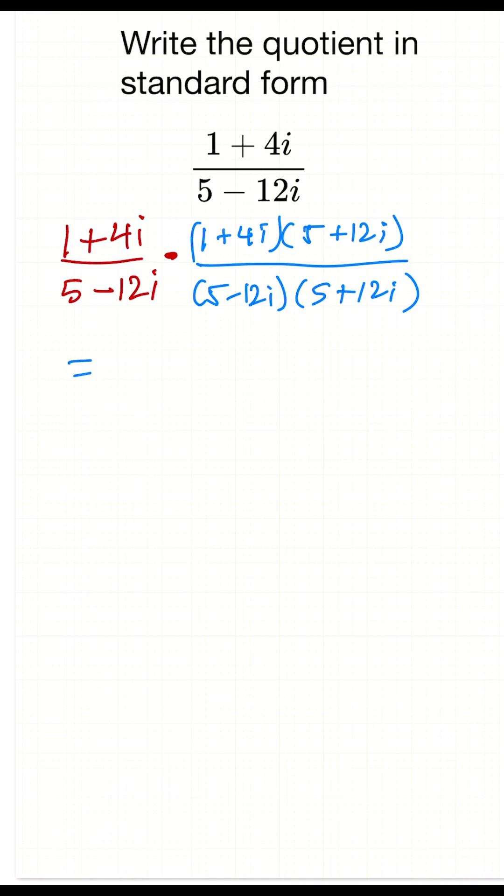Now we need to do the FOIL method on the top: first, outer, inner, and last. And we know the denominator here, we don't have to work too hard with it, because we remember from previous videos that the value is just going to be the square of the coefficients added together. It's the magnitude of the complex number times its complex conjugate.